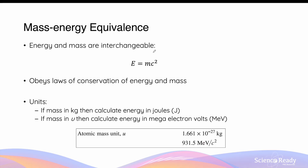When using the mass-energy equivalence principle, there are numerous units that you can use. If the mass to be converted into energy is in kilograms, then the energy calculated using the equation will be in joules, as both kilograms and joules are SI units.